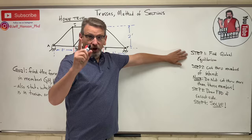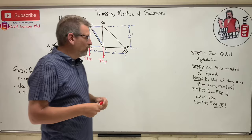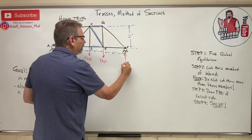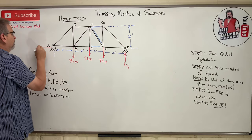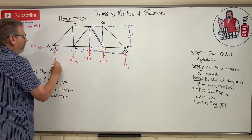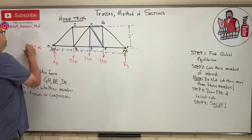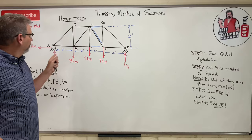Step one: find global equilibrium. Global equilibrium is just for the reaction forces. Where is this thing hooked to the globe? At point A and point F. Over here at F is a roller, so there's a normal force over there, we'll call it F-Y. And over here is a pin connection, it's got an A-X and an A-Y. Right away, I don't see any forces in the X direction, so A-X is like a good friend, he's there when we need him, we just don't need him right now, so he's zero.